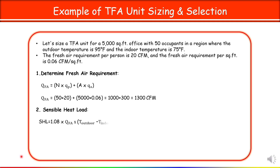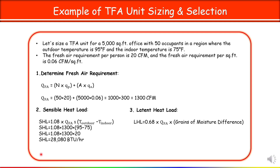Now calculate the sensible heat load using the formula. Fresh air requirement is 1300 CFM. T outdoor is 95°F and T indoor is 75°F. Substituting: 1.08 × 1300 × (95 − 75) = approximately 28,080 BTU per hour — this is the sensible heat load.